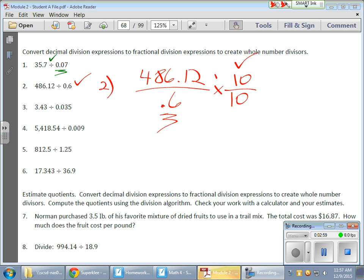So, in this case, I'm going to multiply by 10 over 10. Again, that equals 1. I'm multiplying something by 1, so I'm not changing the value. That 6 winds up in the 1's place. And everything here gains a place value as well. Only one place value because I'm multiplying by 10. So, 486.12 becomes 4,861.2.